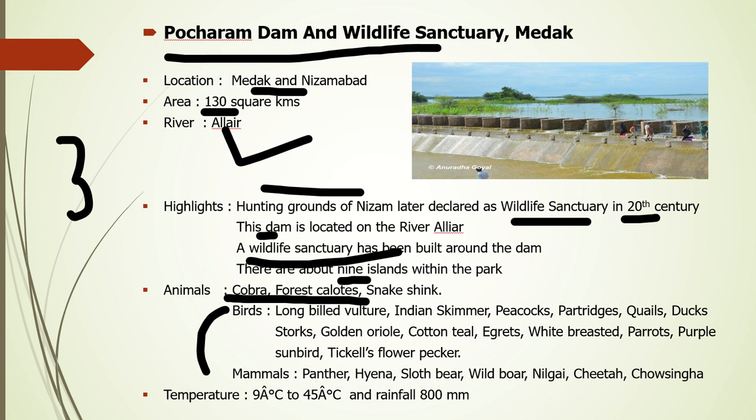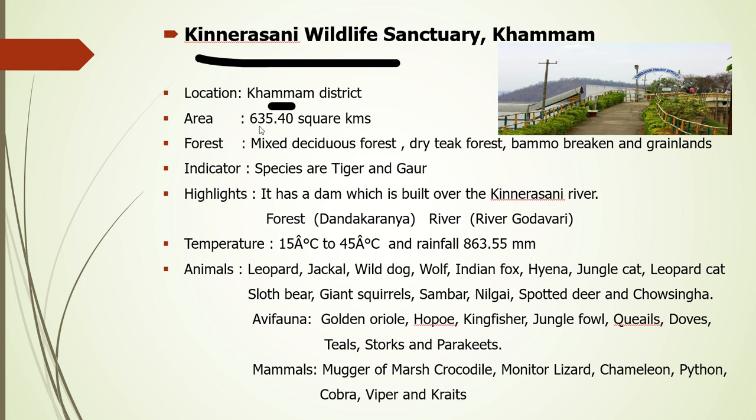The next is Kinnerasani Wildlife Sanctuary, located in Khammam district. Its area is 635.40 square kilometers. The forest type is mixed deciduous forest and dry teak forest. Tiger and gaur are the main indicator species. There is a dam constructed on the Kinnerasani River. Along with tigers and gaur, various other animals can also be found here.